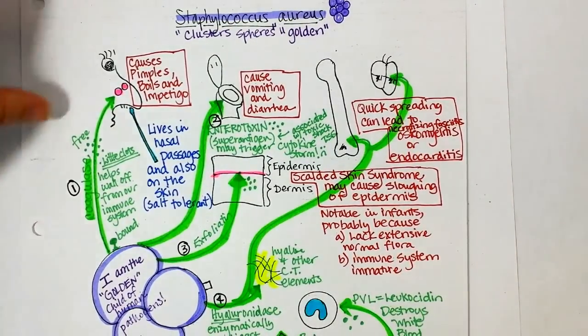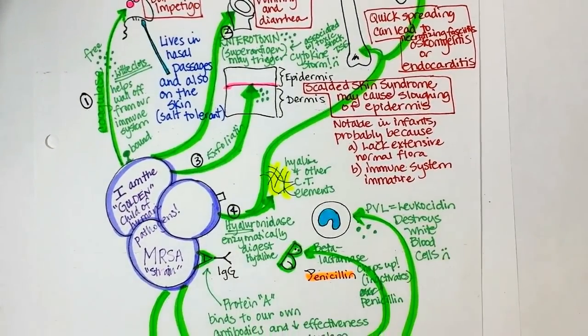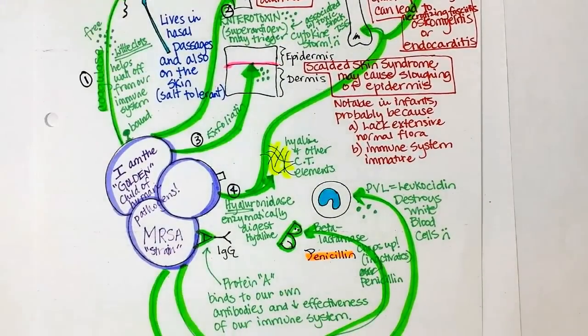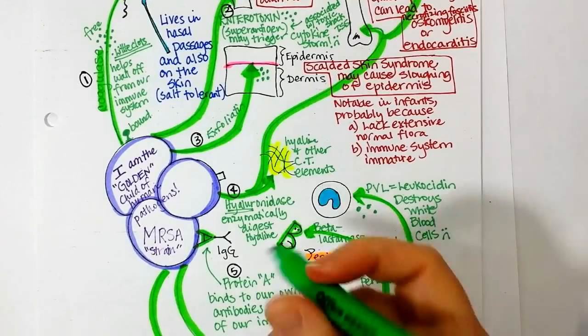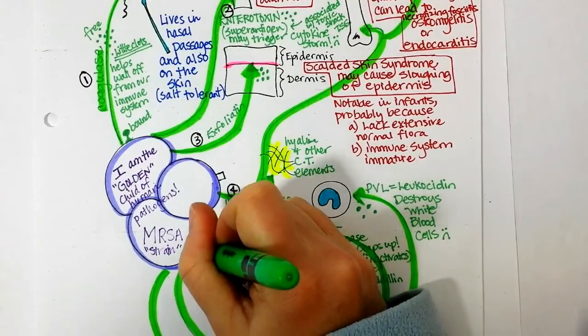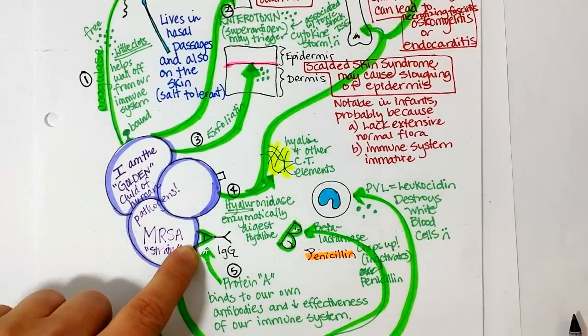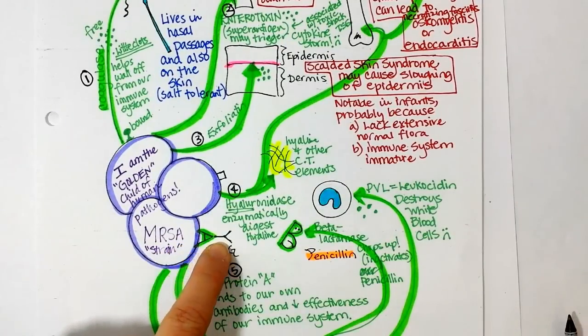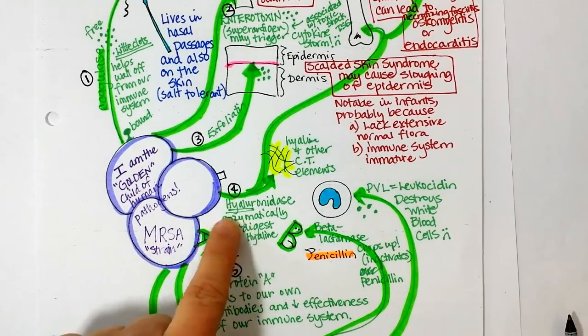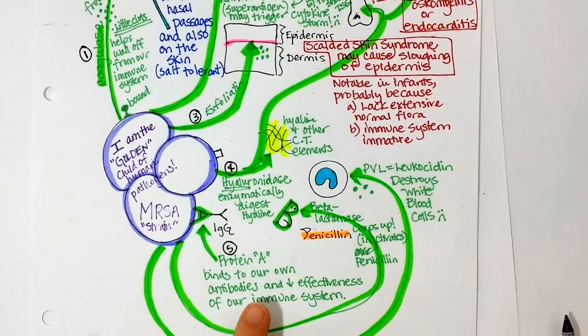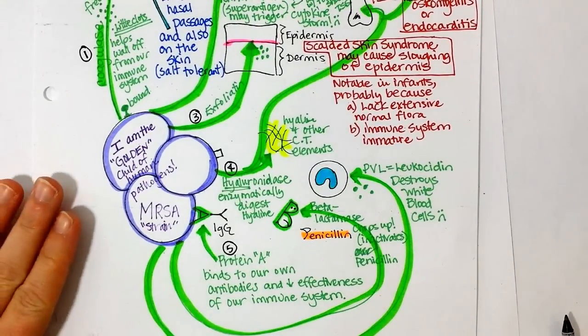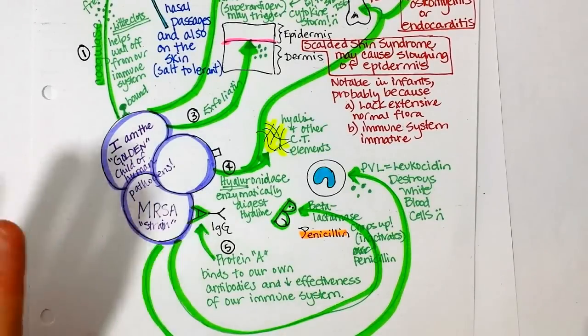And then the fifth virulence factor or toxin that we could talk about is protein A. And protein A is a cell wall component of staph aureus. And it binds to the constant region of antibodies. So this is an antibody. And by doing so, it decreases the effectiveness of our own immune system. And basically mops up antibodies that might be circulating in the blood. To help defend us. And so it takes them out of commission.